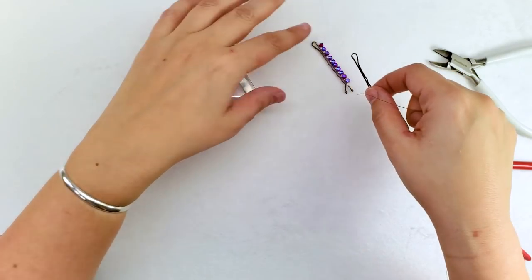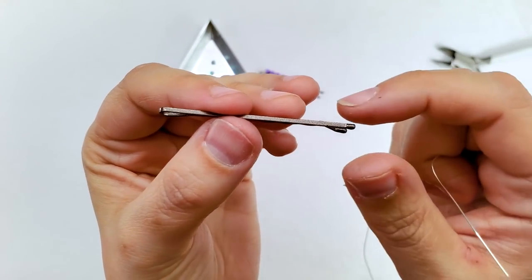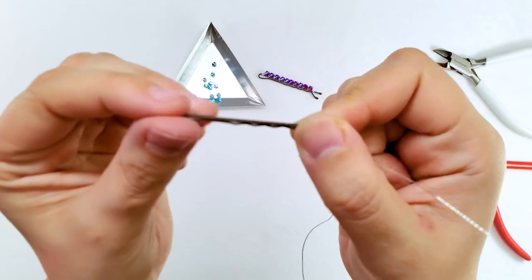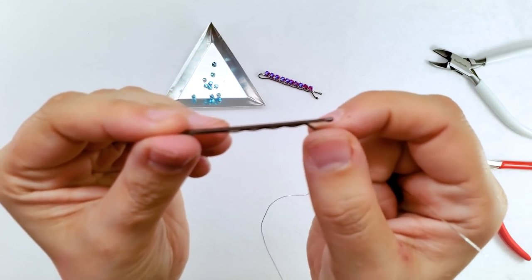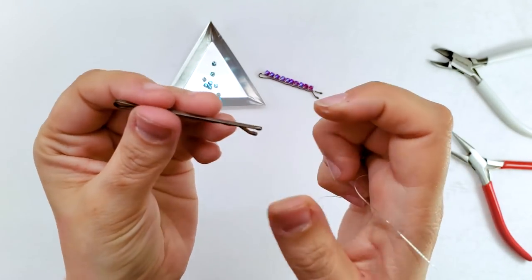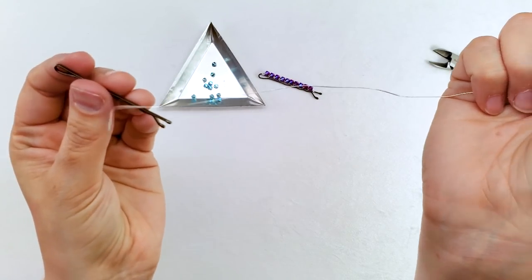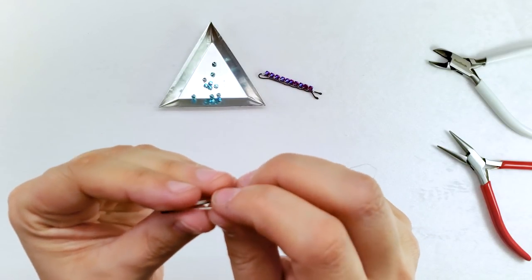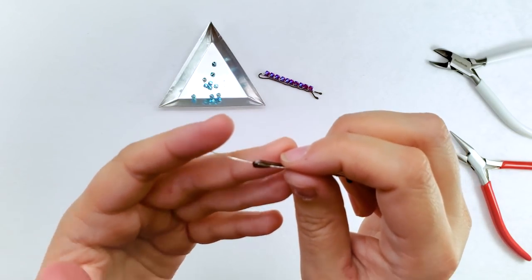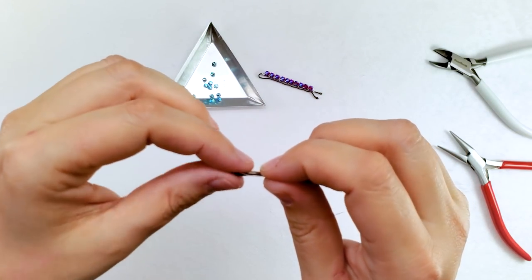All we're going to do is take our bobby pin here and we're going to start at the end that is the curve. So we're not starting at the end that's the opening and we're going to be laying our beads down along the flat end of the bobby pin here. Now I have about a foot worth of wire here just so you'll have an idea of how much we have left, and it's always good to work with a little bit more than you think you need because you want to have plenty to hold to make it comfortable to work with.